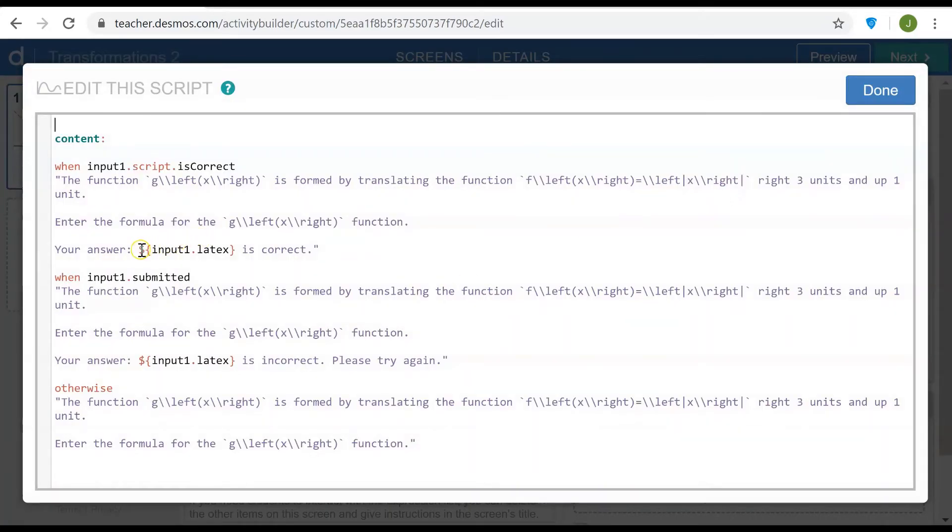So let me go back into the computation layer for the note and here I want to put a little tick mark, not an apostrophe but a little tick mark enclosing those statements so that the LaTeX input gets formatted as a mathematical statement.